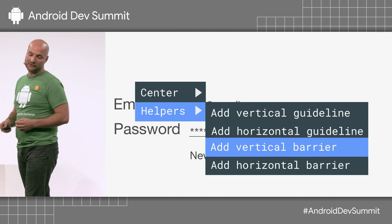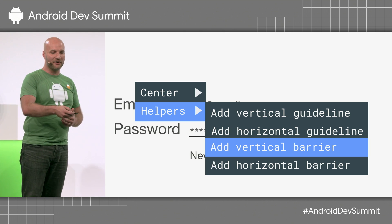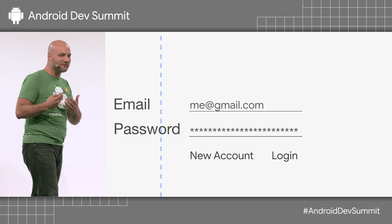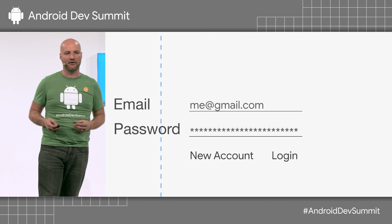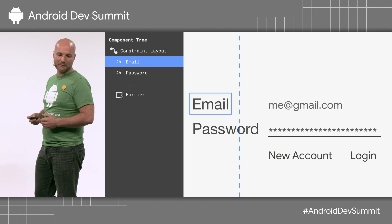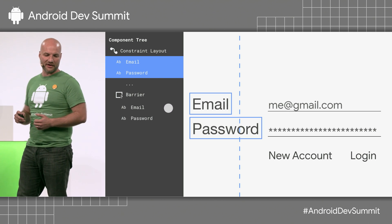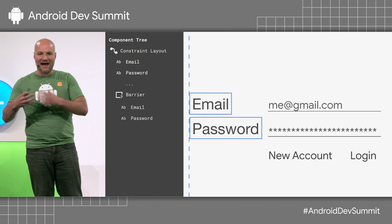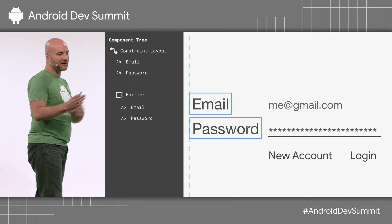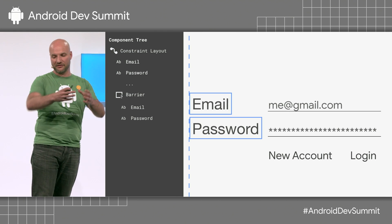We have to go into Helpers and use Add Vertical Barrier. This allows you to add a barrier to the screen. A barrier is kind of like a view group — in fact, it's actually called a group in code. We can open up the component tree, select our email and password, and drag that down to be inside of our barrier. It's not actually a view group; it's a view that's positioned on one side or the other of all the views inside it.